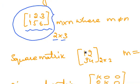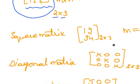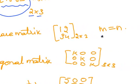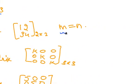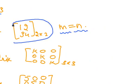A square matrix — a matrix in which the number of rows is equal to the number of columns is called a square matrix. This is a 2 by 2 matrix, also known as a square matrix.